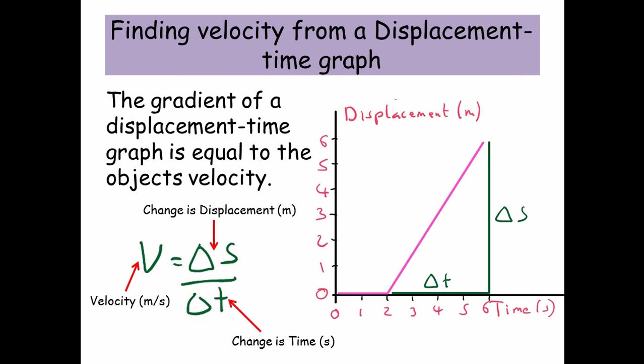The gradient of a displacement time graph is equal to the object's velocity. So here looking at the equation, we've got v equals delta s over delta t. So v is velocity in meters per second, delta s is the change in displacement in meters, and delta t is the change in time in seconds.